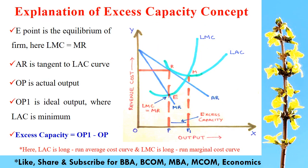The concept of excess capacity can be explained by this figure. Here, point E is the equilibrium point of a firm in the long run. At this point, LMC is equal to MR and AR is the tangent to the LAC curve.